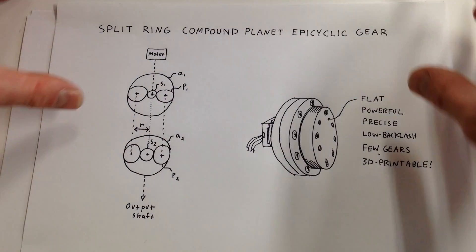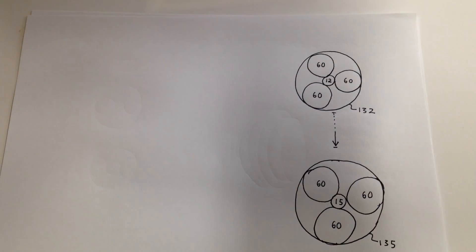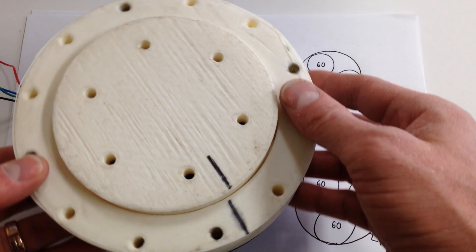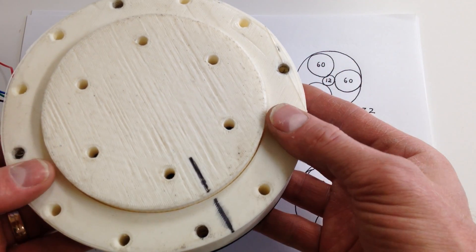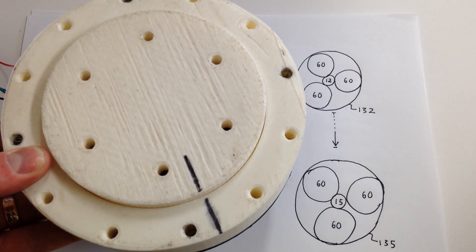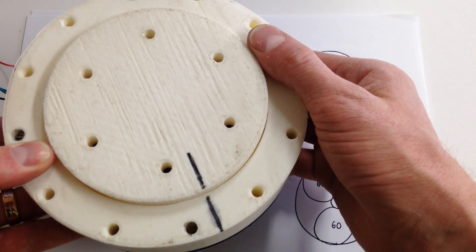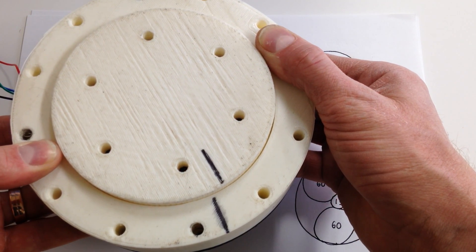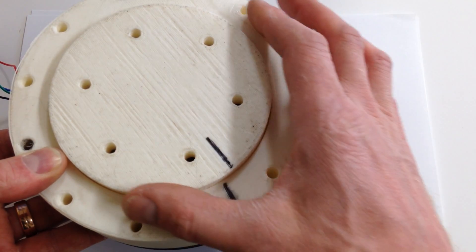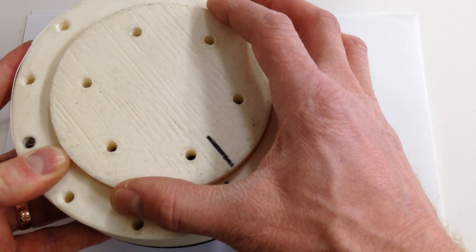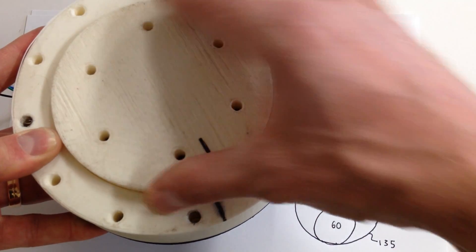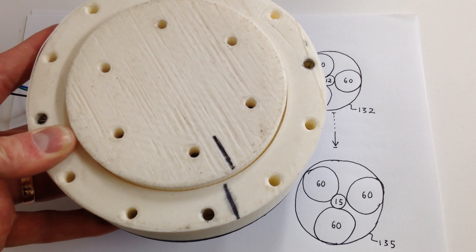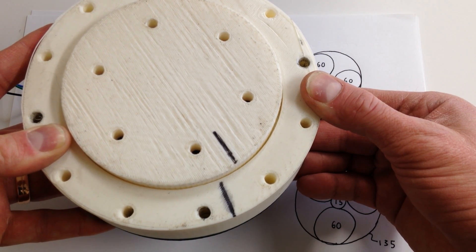This is pretty abstract. Let me show you what one of these things actually looks like. Here, I've got one I 3D printed, and if I have it lined up here, I can hit go, and it chugs right along. This doesn't even have any bearings at all, so it has a little bit of play, a little bit of wobble.